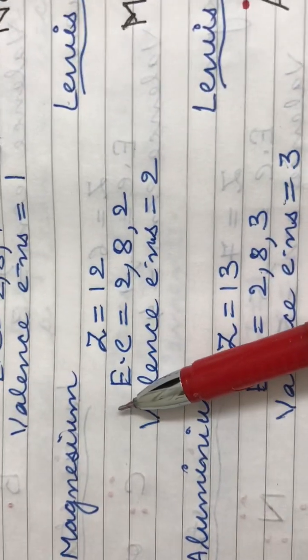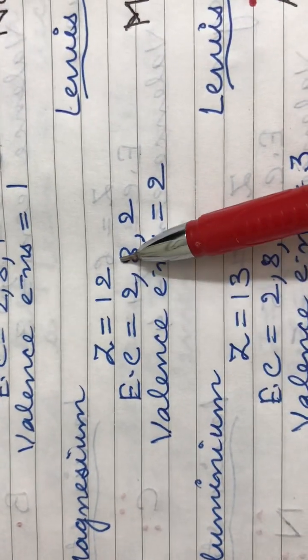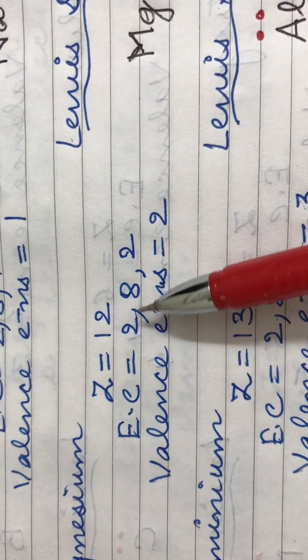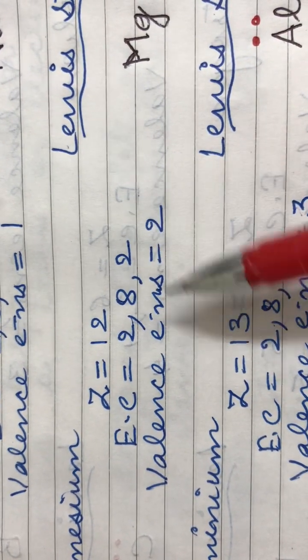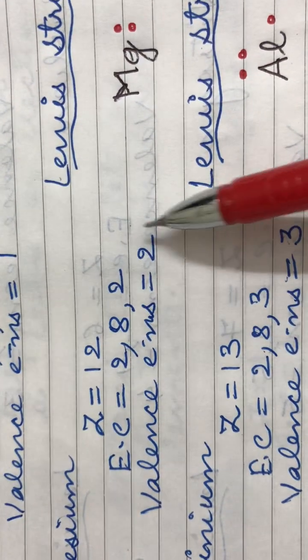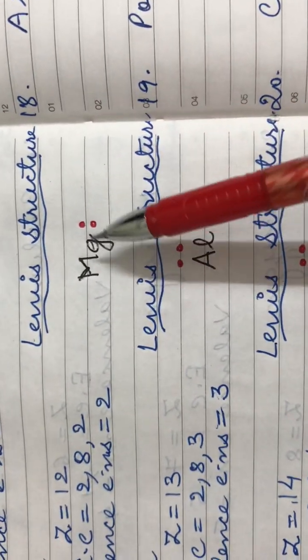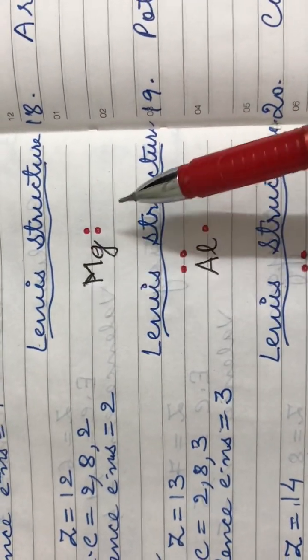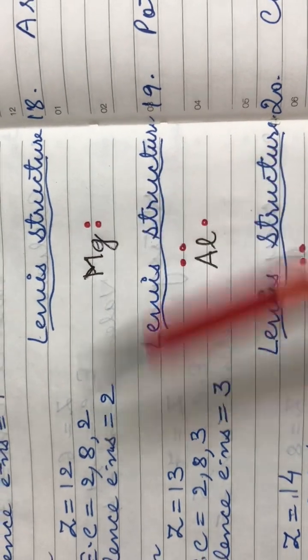Next is magnesium. It has an atomic number of twelve. Its electronic configuration is 2,8,2 and it has two valence electrons in its outermost shell. Therefore, the Lewis structure for magnesium is its symbol Mg with two dots for the two valence electrons.